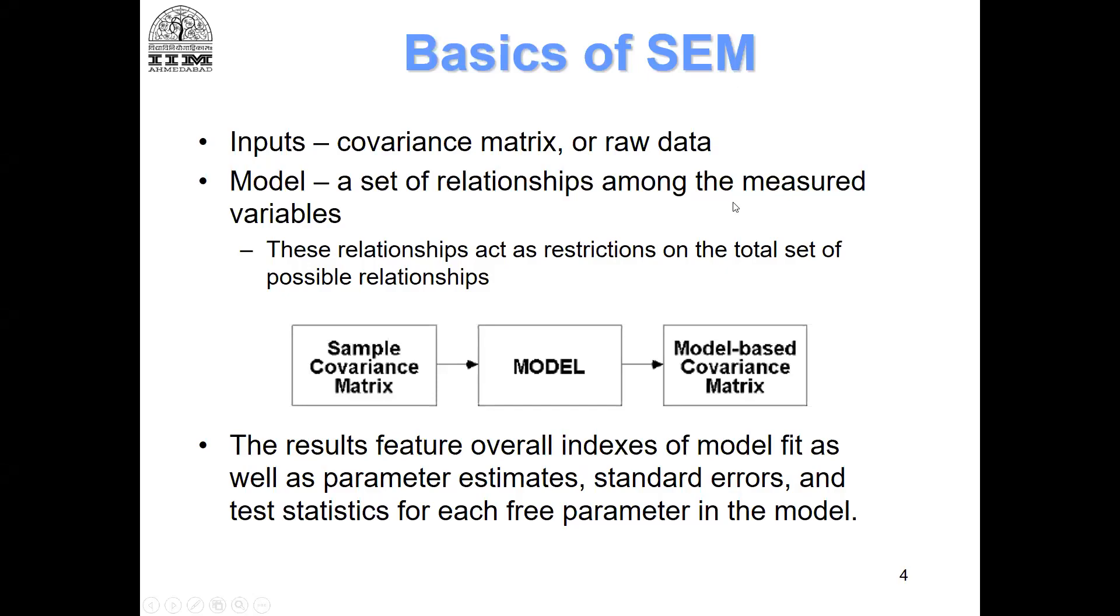Right, so before we stopped, we were talking about the sample covariance matrix model and the model-based covariance matrix as output. The sample-based covariance matrix is compared with the model-based covariance matrix and the fit of the model is assessed. This chi-square is basically a gold standard index that would be reported whenever we talk about the fit of our models with the data. The results will give us an overall index of model fit, parameter estimates, standard errors, and all of the parameters we would be looking for.